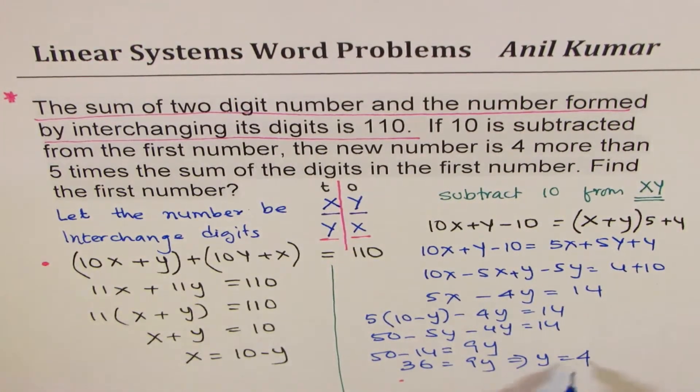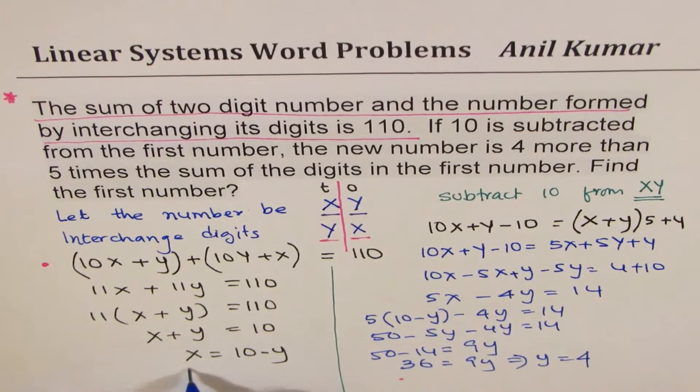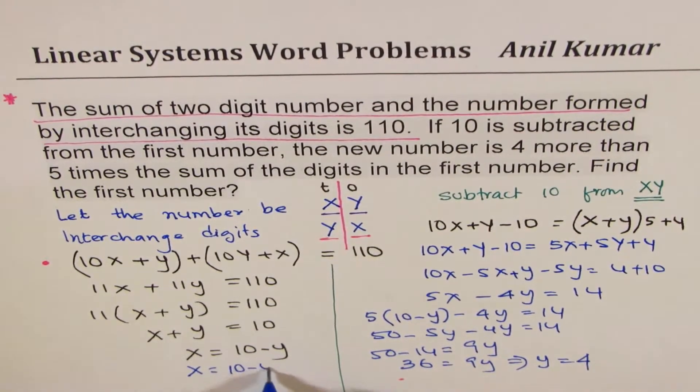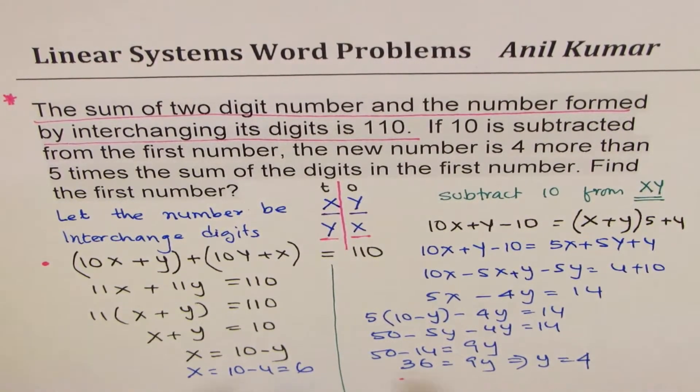Perfect. So we get the value of y as 4, and if y is 4, x is 10 minus 4, which is 6. Now we get find the first number.